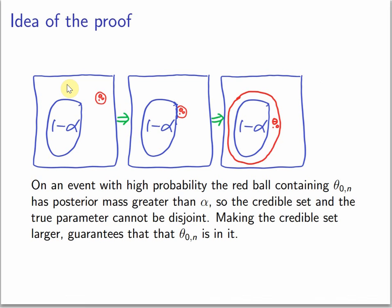What's the idea? The idea is very similar. You have the credible set and then you have your ball where the posterior concentrates in. Eventually on an event with high probability, the posterior mass of this ball is bigger than alpha, so they cannot be disjoint. So if you make them larger, then the true parameter must be in this set.